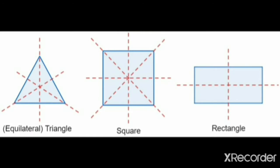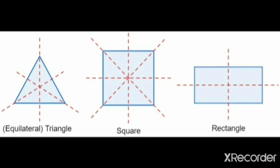Here we have three examples: equilateral triangle, square and rectangle. We can divide this equilateral triangle. An equilateral triangle has all three sides of equal measurement. So if I draw a line of symmetry in this way, the triangle is divided into two parts. There are two more ways — one and two. So there are three lines of symmetry.